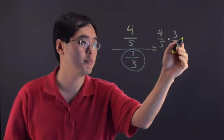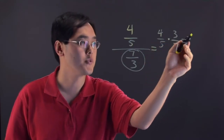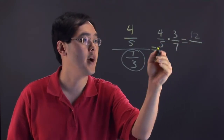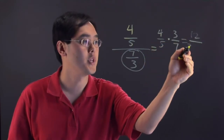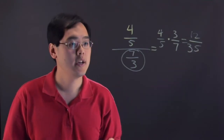In this case, you can just multiply across. 4 times 3 is 12, and 5 times 7 is going to give you 35.